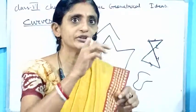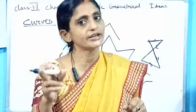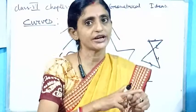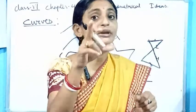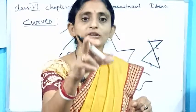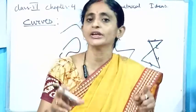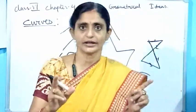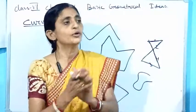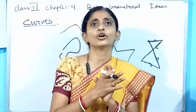Poly means many, and 'gon' means side — many-sided. But all those many sides must be straight lines.